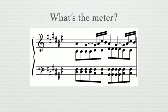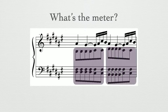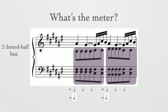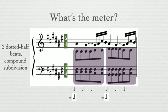What's the meter? Pause now and take your time. You should have found these 2 beamed groups, which each equal 1 dotted half note in duration. With 2 dotted half note beats in compound subdivision, you should have found 6/4 meter.